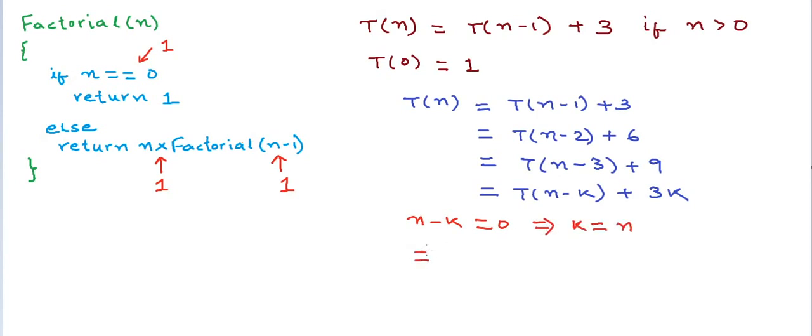So this expression would finally reduce as T(n) = T(0) + 3n, which is nothing but 3n + 1 because T(0) is 1. So we can see that the time taken by this particular program for an input n is directly proportional to n, and we can also say that this is Big O of n in terms of time complexity, or this is an order of n algorithm.